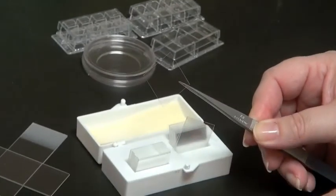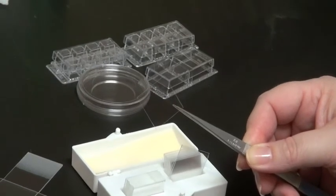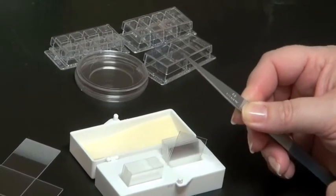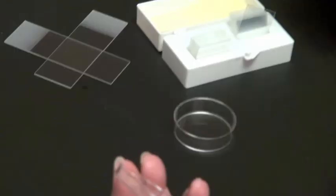You want to sterilize these so you would dip this in ethanol and then flame sterilize. Once it's cool you simply lift off the top of your petri dish and deposit the cover glass.